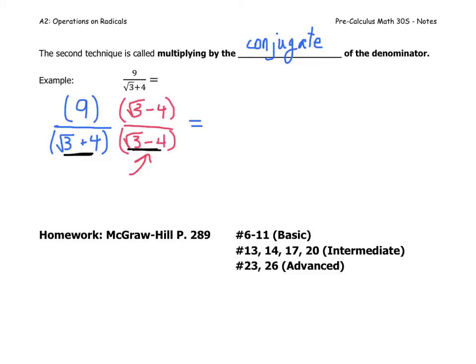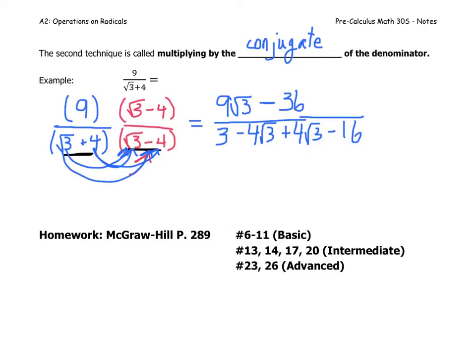So what does this give us? 9 times root 3 is 9 root 3. 9 times 4, that's 36, so we've got negative 36. And what happens in our denominator? This is going to be interesting. Root 3 times root 3 is 3. Root 3 times negative 4, that's negative 4 root 3. 4 times root 3 is plus 4 root 3. And then 4 times negative 4 is negative 16. Look what happened. I have negative 4 root 3 and positive 4 root 3. Boom. They're gone. And all I'm left with now, in the numerator, it's the same thing, 9 root 3 minus 36. And the denominator, it's just 3 minus 16, which is negative 13.